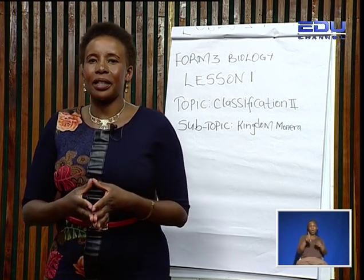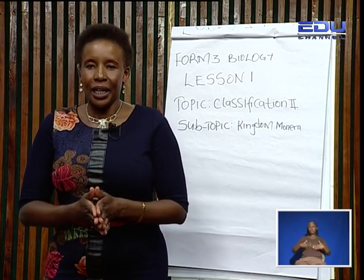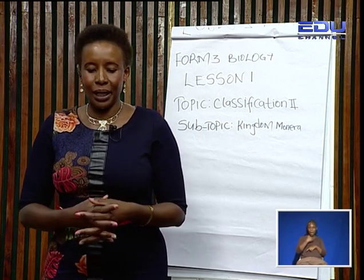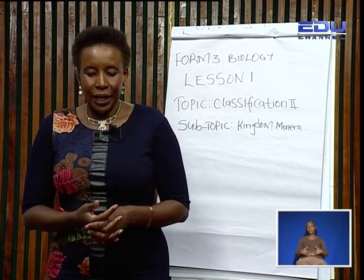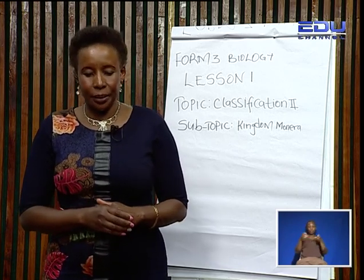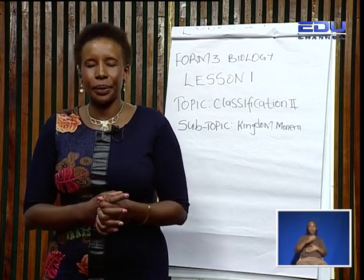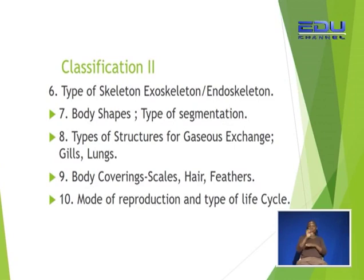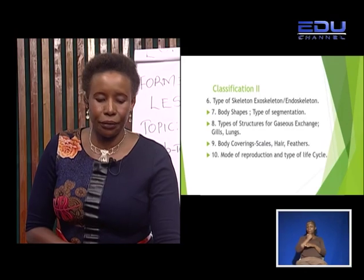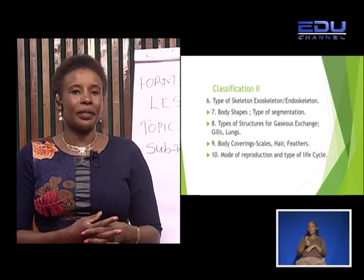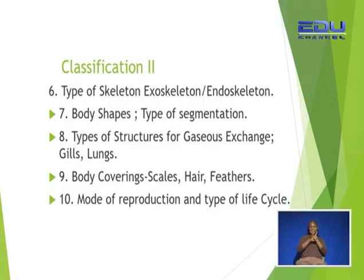An organism like a spider has two body parts, and others like earthworms have several segments on their bodies. The structure of gaseous exchange organs can also be used to classify living organisms. Some use gills, like fish; others use lungs, like humans; others use skin, like frogs; and others use the lining of the buccal cavity, again like frogs. Another feature is body coverings — we have different body coverings, such as scales for fish, hair for mammals, and feathers for birds.